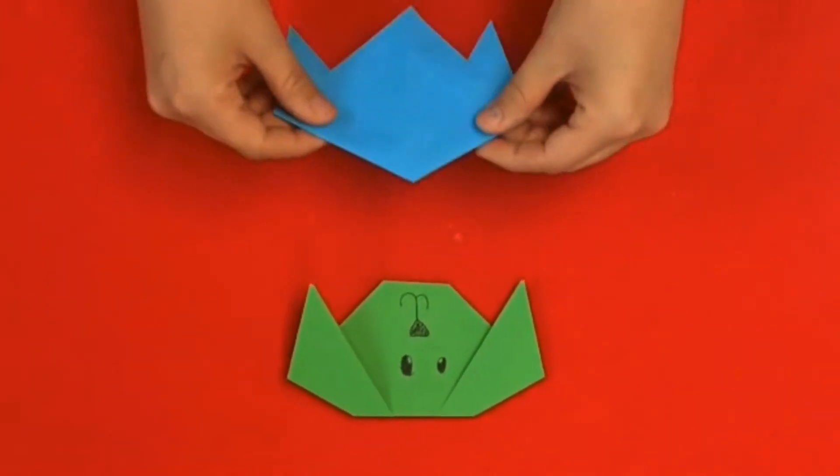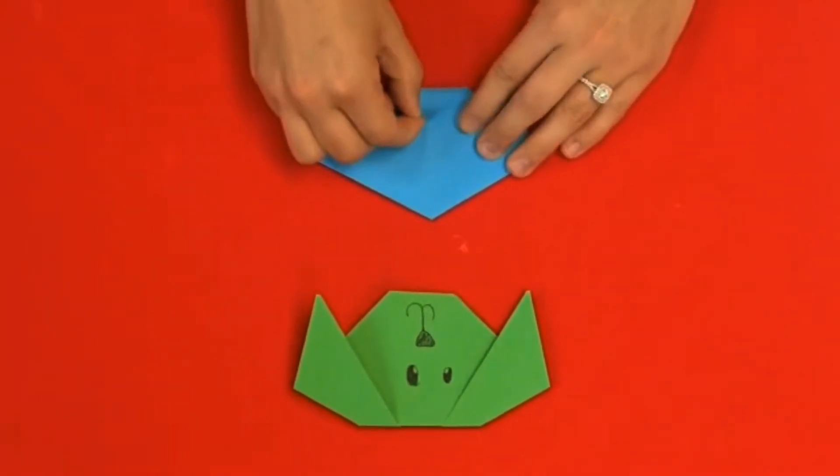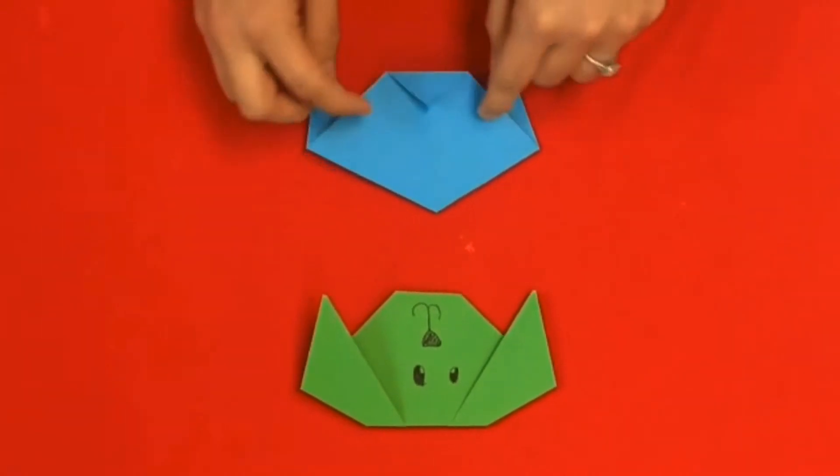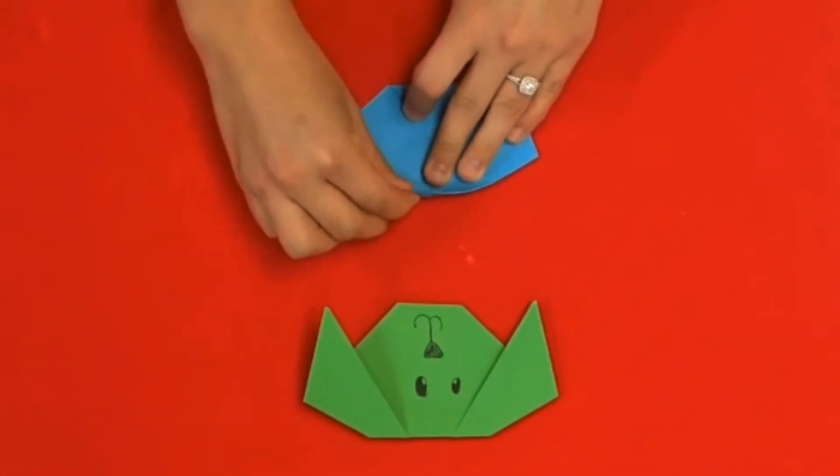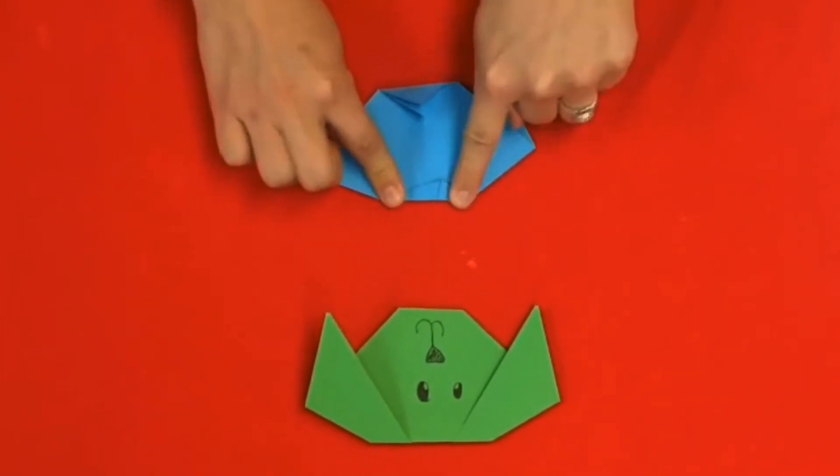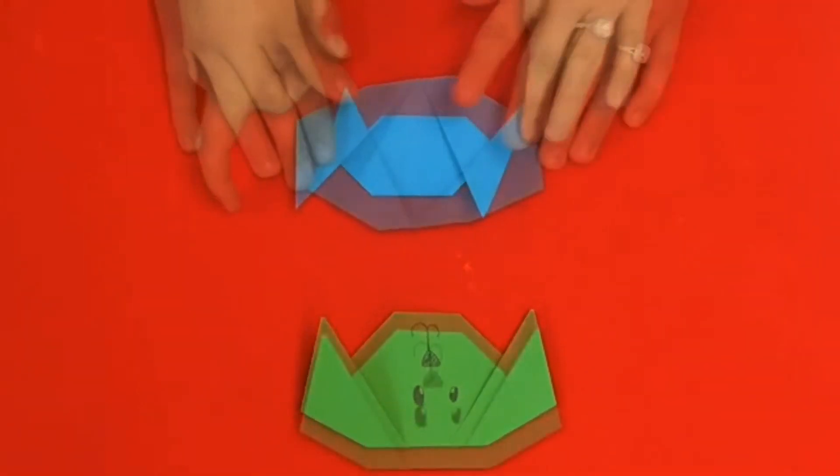Now you're going to flip it over and you're going to have its chin be folded in because your dog doesn't want a pointing chin. And you will also put a fold on the top of its head. You should now have a dog.